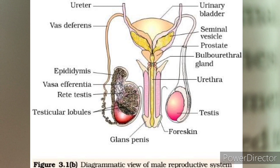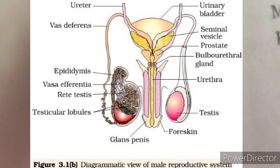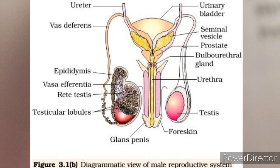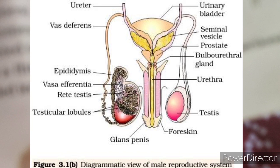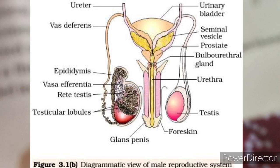The accessory glands, which help indirectly in the process of semen formation, are the seminal vesicle, prostate, and paired bulbourethral glands. The secretion of these glands includes seminal plasma — a liquid rich in fructose, calcium, and certain enzymes that help in the fertilization process. The secretion of the bulbourethral glands helps in lubrication of the penis. Seminal plasma together with sperms makes semen, the male reproductive fluid, which enhances the fertilization process.